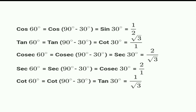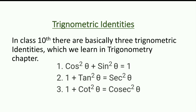Continuing: sec 60 = sec(90 − 30) = cosec 30 = 2, so sec 60 equals 2. Cot 60 = cot(90 − 30) = tan 30 = 1/√3. This completes the full solution using complementary angle relationships. Now we move to the next topic: trigonometric identities.